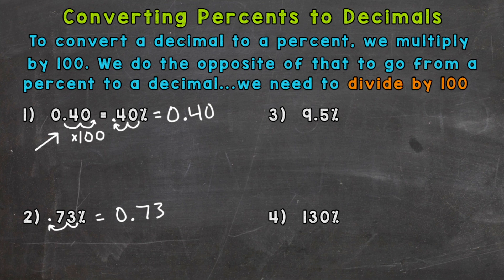For number three, we have nine and five tenths percent or nine and a half percent. So again, divide by 100 or move the decimal twice to the left. One, two, fill that gap with a placeholder zero, and we end up with ninety-five thousandths.